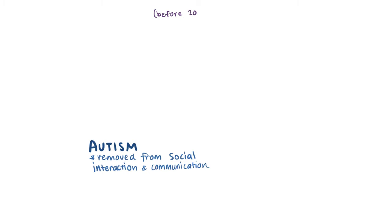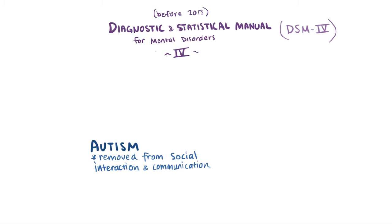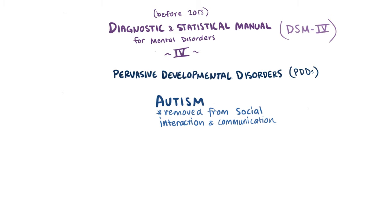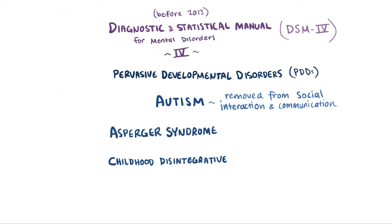Before 2013, the Diagnostic and Statistical Manual for Mental Disorders, fourth edition, or the DSM-IV, described autism as one of several pervasive developmental disorders, which also includes Asperger's syndrome, childhood disintegrative disorder, and those not otherwise specified, or PDD-NOS.